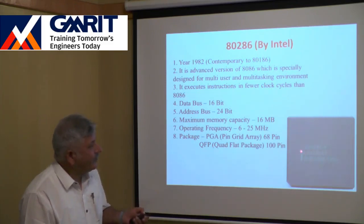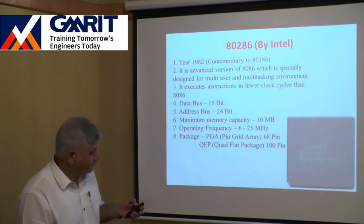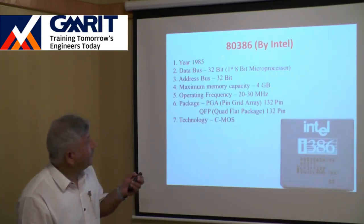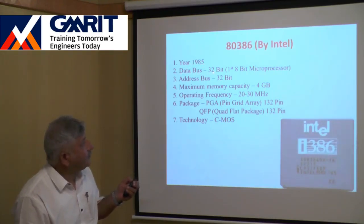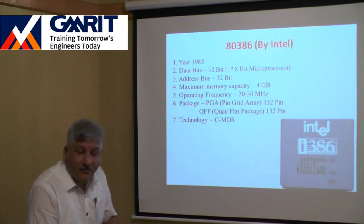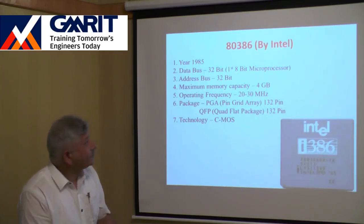The 80286 used PGA (68 pins) and QFP (100 pins) packages, and it was launched in 1982. After the 80286, Intel launched the 80386 in 1985. Here they doubled the data bus from 16-bit to 32-bit, making this the first 32-bit microprocessor launched by Intel.